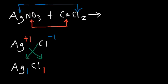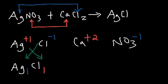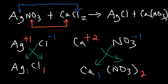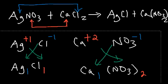Now when calcium pairs up with nitrate, the positively charged ion is written first. Using the criss-cross method, it's going to be Ca¹(NO₃)₂. Whenever you have multiple polyatomic ions you need to enclose them in parentheses, so the other product is Ca(NO₃)₂.